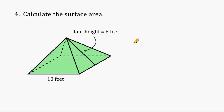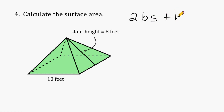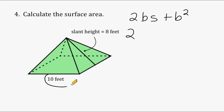When finding the area of a square pyramid, I like to use the formula: 2 multiplied by the base of the pyramid multiplied by the slant height, plus b to the second power. We always start with the number 2. Then we identify the length of the base, which is at the bottom of our pyramid — it is 10 feet. So we substitute the letter b with 10.